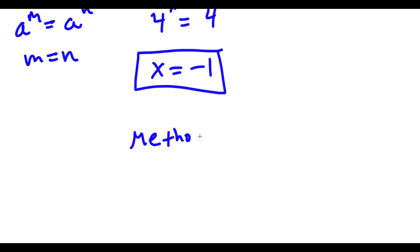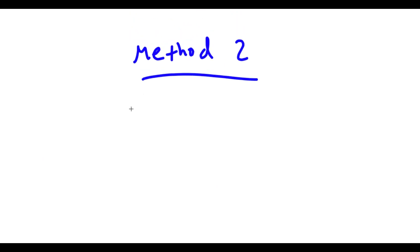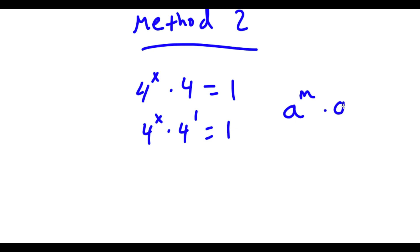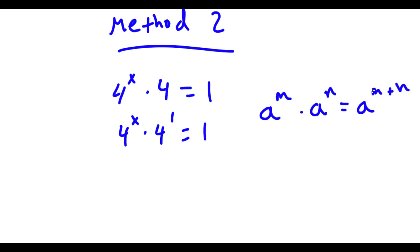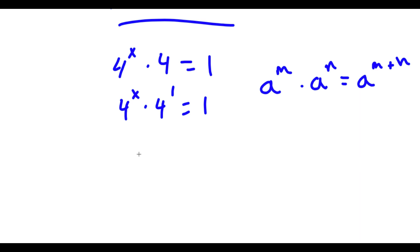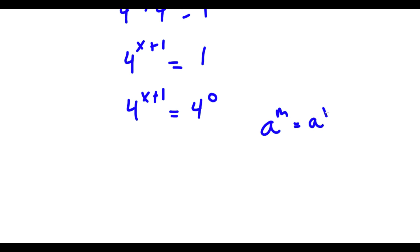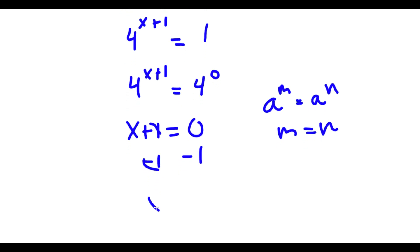Now for method 2, the original equation was 4 to the power of x times 4 is equal to 1. Instead of dividing by 4 on both sides, I'm actually going to multiply 4 with 4 to the power of x. Well, first of all, 4 we can rewrite as 4 to the power of 1. And now if I have a to the power of m times a to the power of n, this is equal to a to the power of m plus n. So 4 to the power of x times 4 to the power of 1 equals 4 to the power of x plus 1. Now 1 here we can rewrite as 4 to the power of 0, because anything to the power of 0 is 1. So if a to the power of m equals a to the power of n, then m equals n. So x plus 1 is equal to 0. To solve this, I subtract by 1 on both sides, and I get x is equal to negative 1.